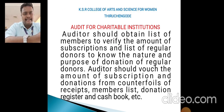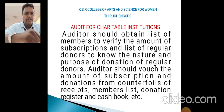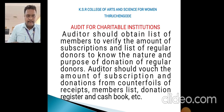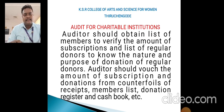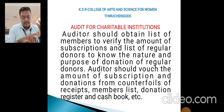For the audit of charitable institutions, the auditor should obtain a list of members to verify the amount of subscription, and a list of regular donors to know the nature and purpose of donations. The auditor should vouch the amount of subscriptions and donations, and verify counter files including receipts, member lists, donation registers, and cash books.